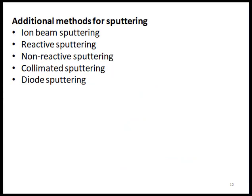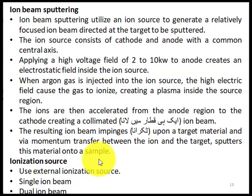Next are some additional sputtering methods: ion beam sputtering, reactive sputtering, non-reactive sputtering, and collimated and diode sputtering. Ion beam sputtering utilizes an ion source to generate a relatively focused ion beam directed at the target to be sputtered.